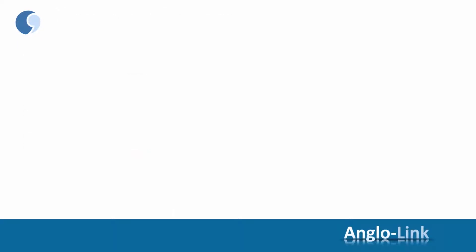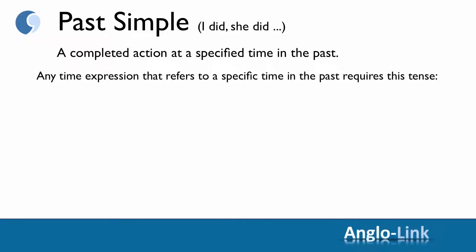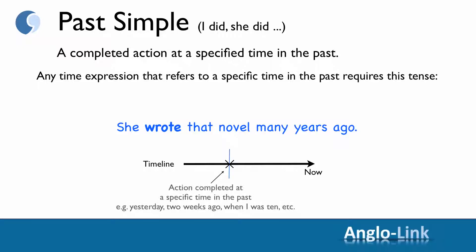Moving on to the past simple — I did, she did, etc. Remember that initially we contrasted past simple with present perfect, because past simple is also a completed action, but at a specified time in the past. Any time expression that refers to a specific time in the past requires this tense — for example: yesterday, last year, a week ago, when I was young. For example: she wrote that novel many years ago — or yesterday, or two weeks ago, or when I was ten. You have a specified time in the past.